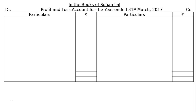The question is to prepare the Profit and Loss Account of Shohanlal as it would appear in the first year ended 31st March 2017. In the books of Shohanlal, we have to draw the Profit and Loss Account for the year ended 31st March 2017, with debit and credit sides, particulars, and rupee symbol on both sides.